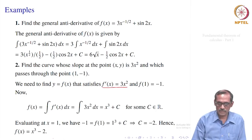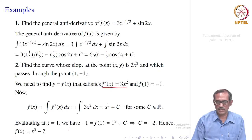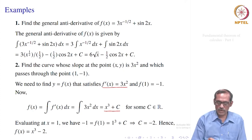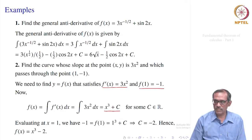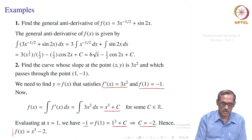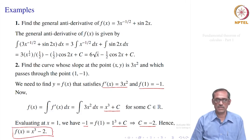Since f'(x) = 3x², by the second fundamental theorem, f(x) equals the integral of f'(x) dx, which is the integral of 3x² dx. Since 3x² is the derivative of x³, the integral is x³ + c for some constant c. We know f(x) is in this form, and we evaluate c using f(1) = −1. Taking f(1): minus 1 equals 1 cubed plus c, so c equals minus 2. Hence f(x) = x³ − 2.